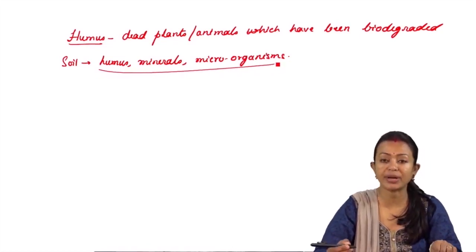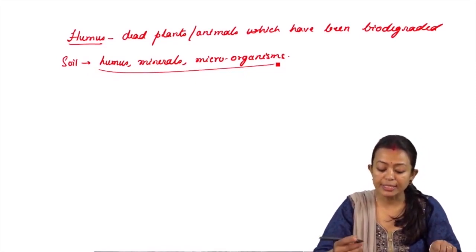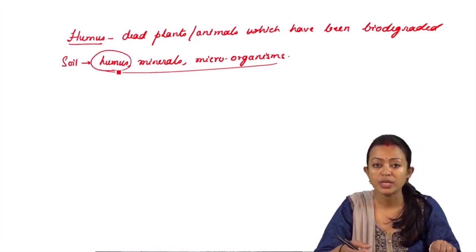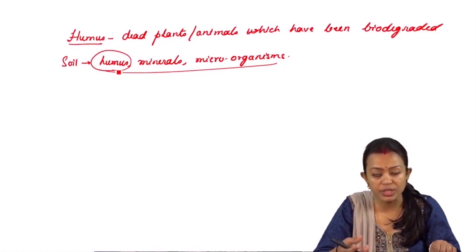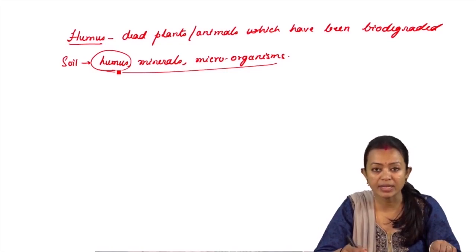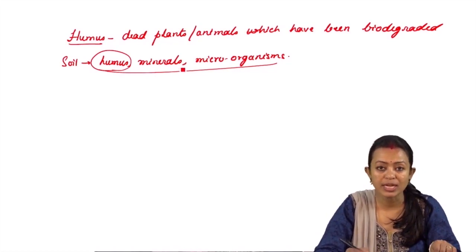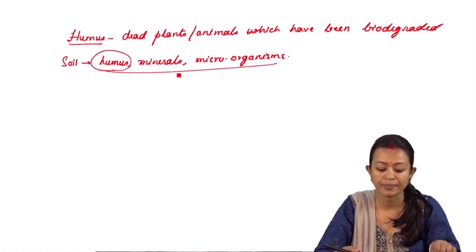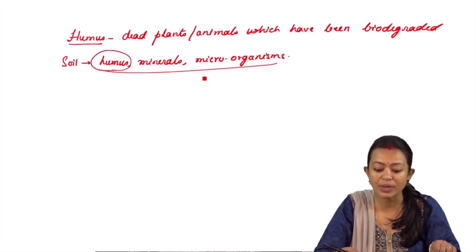Humus contributes a lot to the productivity of the soil — the more the humus, the greater the nutrient content, and thus crop production and vegetation will be more plentiful. Where vegetation is more, the availability of animals, birds, and other living organisms also increases. Minerals support the fertility of the soil, and microorganisms contribute greatly to soil fertility by enriching it with nutrients and carrying out biodegradation.